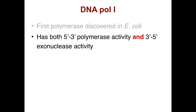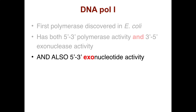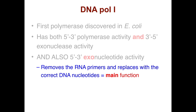DNA polymerase 1 was the first polymerase discovered in E. coli. It has both 5' to 3' polymerase activity and 3' to 5' exonuclease activity, and it also has 5' to 3' exonuclease activity. This allows it to remove the RNA primers and replace them with the correct DNA nucleotides — that is the main function of DNA polymerase 1. There are other DNA polymerases that have other repair functions.